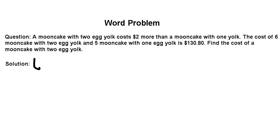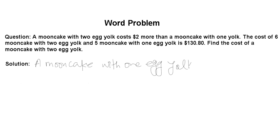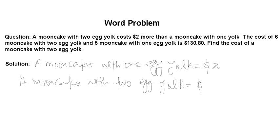Let me adjust the pen nib — okay, now this is much better. I know my handwriting isn't great, so please pardon me for that. Let us assume that a moon cake with one egg yolk costs x dollars. So a moon cake with two egg yolks will cost two dollars more than that, meaning x plus two.